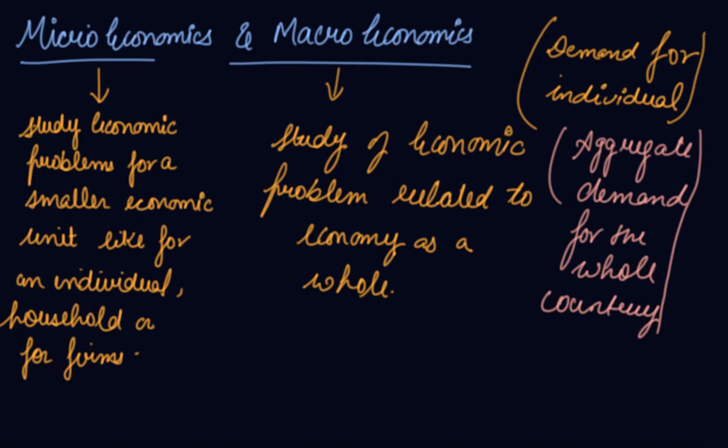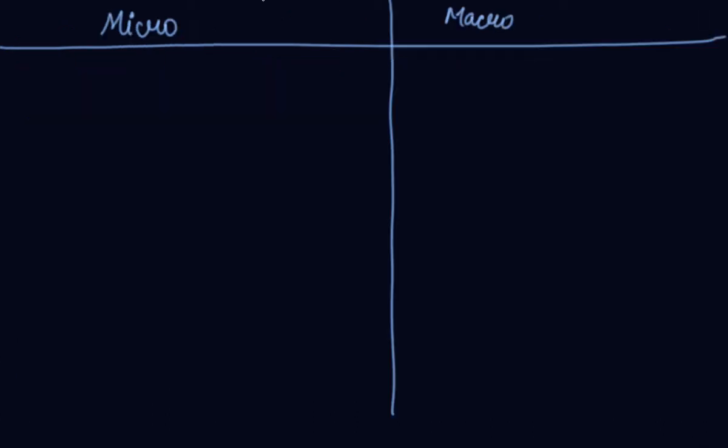So microeconomics is the study for an individual or a smaller unit from the whole economy. But when you study the whole of the economy, then it is your macroeconomics. Let's study the differences between them.